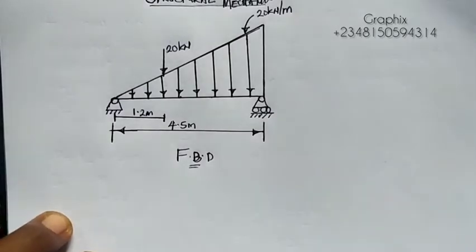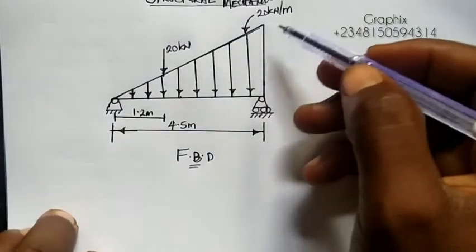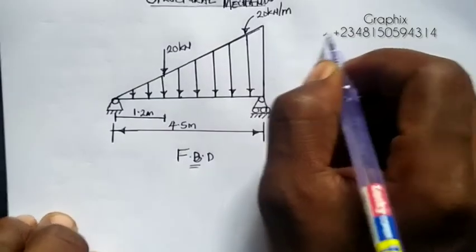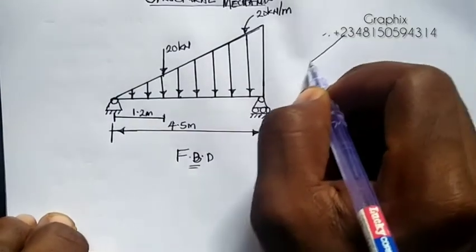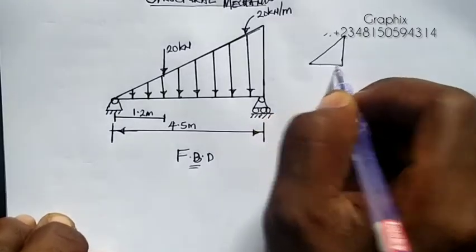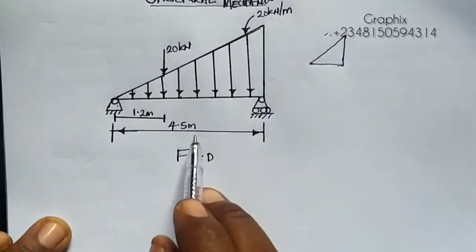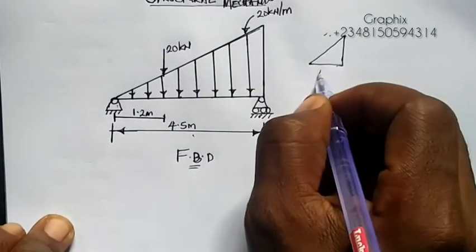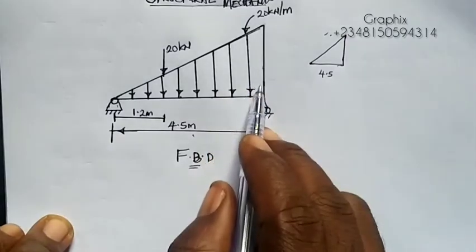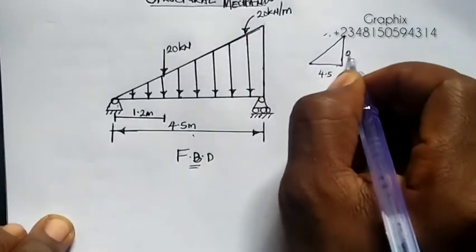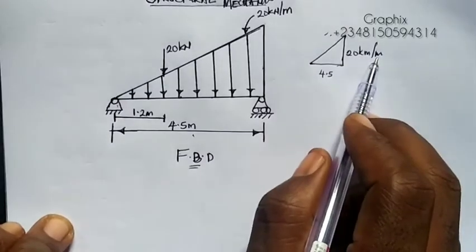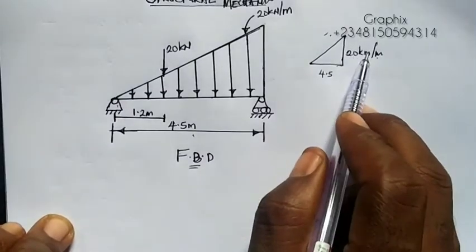Before drawing it, we need to understand one thing — we have something like a triangle. The length of the triangle is 4.5 meters, and the height of the triangle is 20 kN per meter. That means in every 1 meter, it is 20 kN.